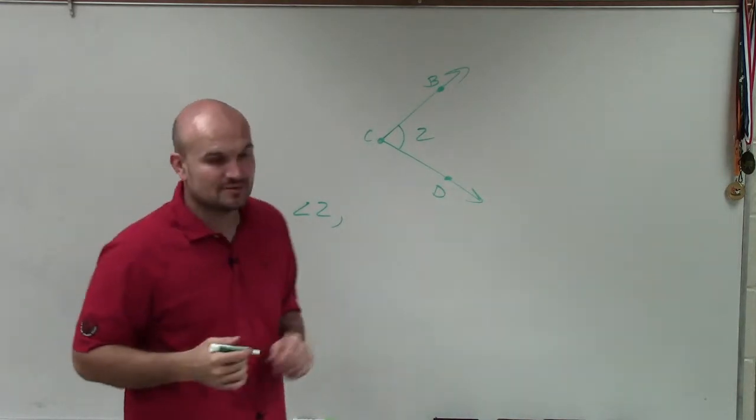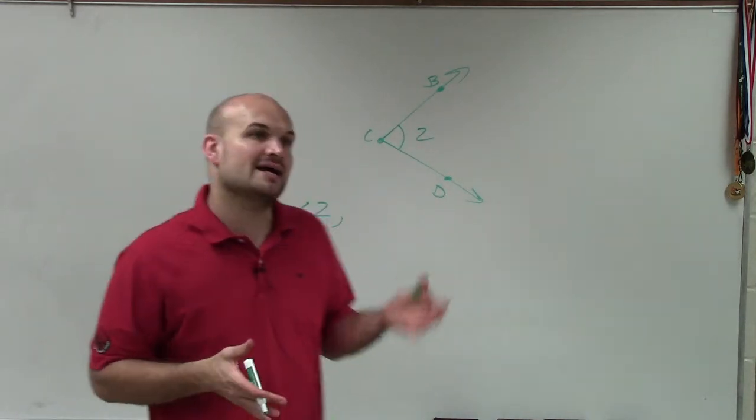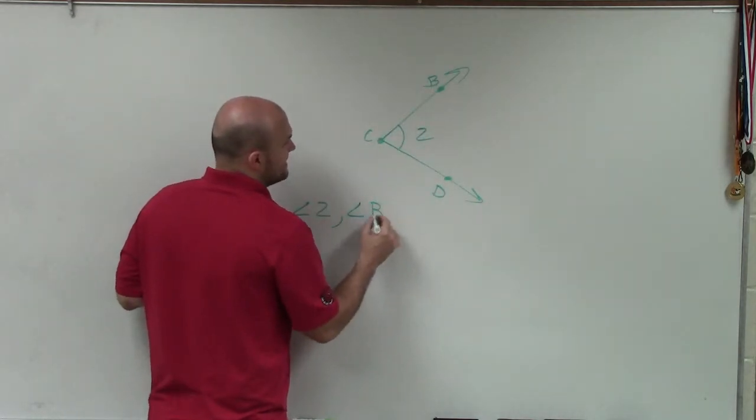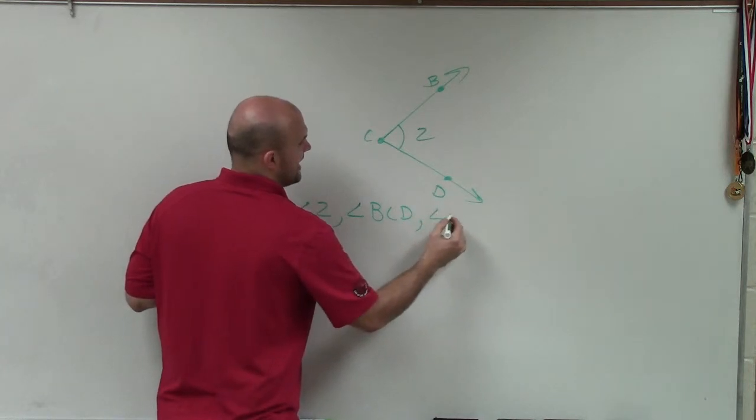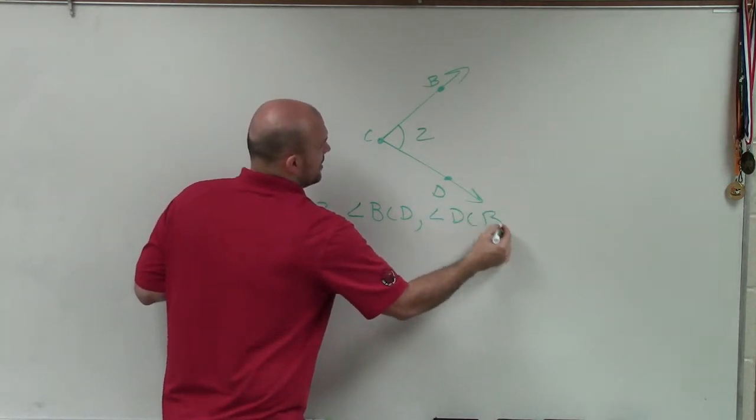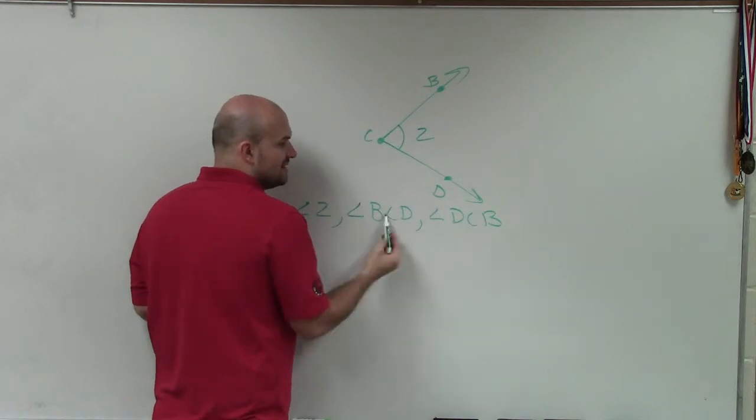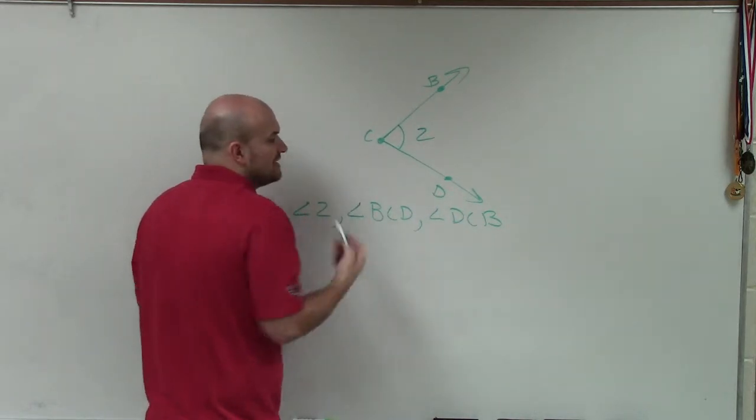A lot of times we'll label angles by the points that are contained within the angle. So I could say angle BCD or I could say angle DCB. Notice how the common endpoint is in the middle of how I label them.